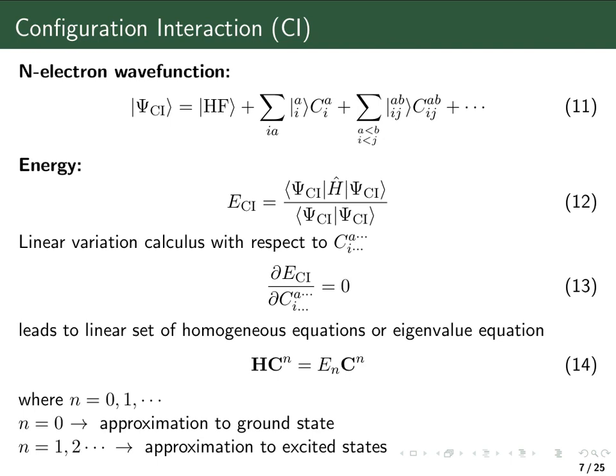One takes the derivatives of this energy expression with respect to all the expansion coefficients — for single-excited determinants, double-excited determinants, and so forth — and sets them all to zero. This gives a very large set of linear homogeneous equations, which can be written in matrix form and rewritten as an eigenvalue equation. The Hamiltonian matrix elements are integrals over the Hamiltonian with different Slater determinants.